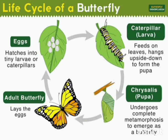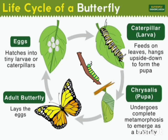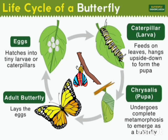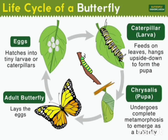That is the adult butterfly. It lays eggs that will hatch into tiny larvae, or caterpillars. The larva will feed on leaves, hang upside down, and form a pupa. The pupa will undergo complete metamorphosis to emerge as a butterfly.